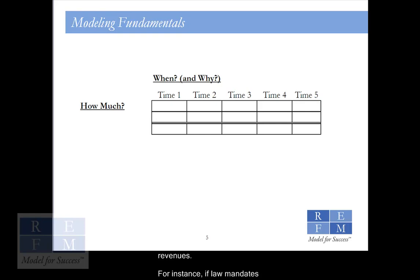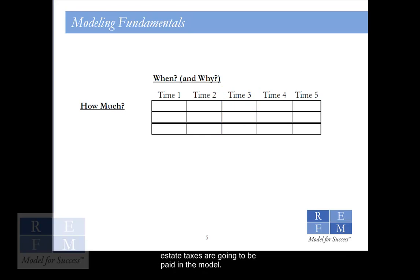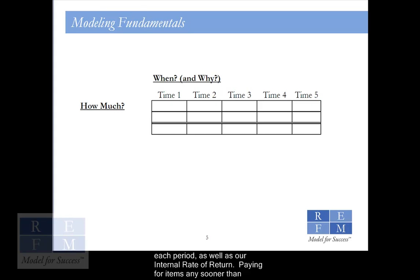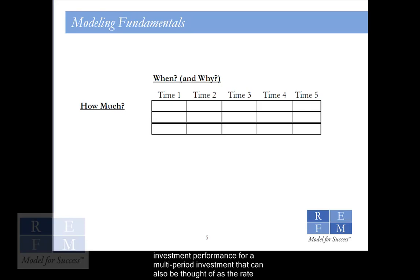For instance, if law mandates that we pay our real estate taxes in time period 3, then that is exactly when the real estate taxes are going to be paid in the model. The when element is important because it affects our cash flow in each period, as well as our internal rate of return. Paying for items any sooner than necessary would negatively affect our internal rate of return, which is a measure of investment performance for a multi-period investment that can also be thought of as the rate of growth in cash flow that the investment is expected to generate.